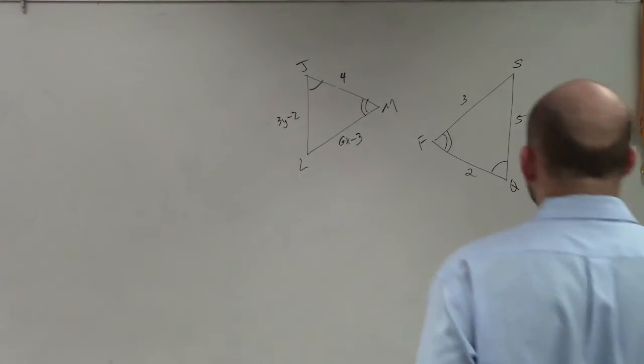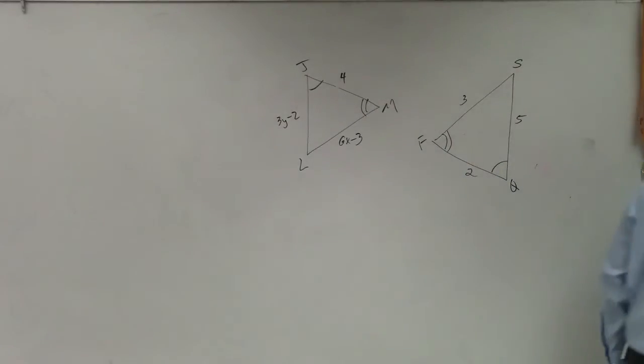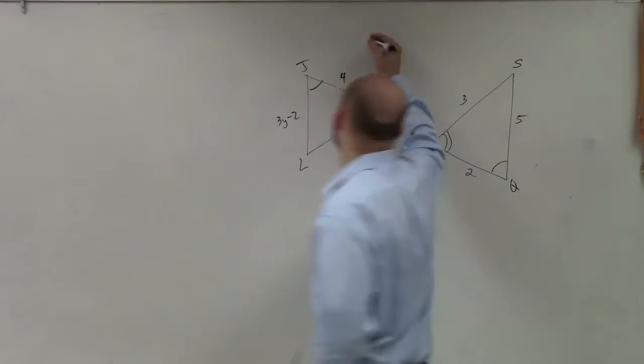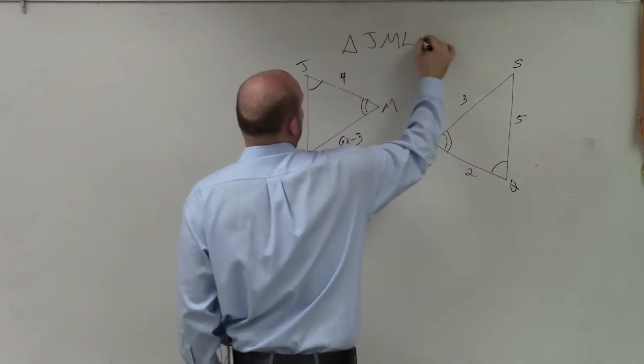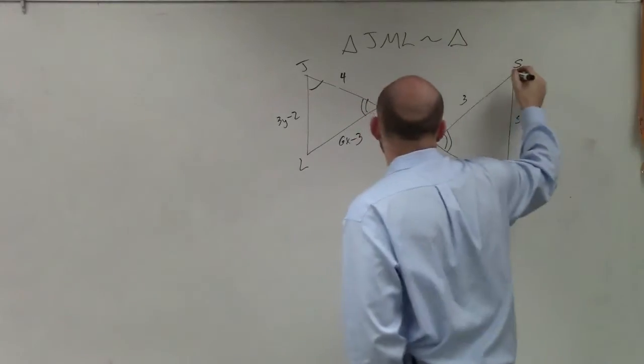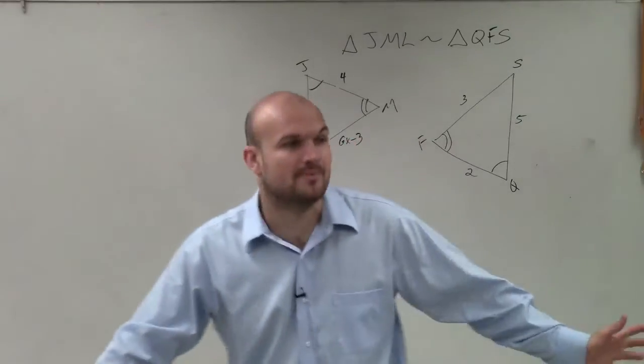So in this case, ladies and gentlemen, what we have is we have two figures. And I believe it does say JML. So actually, they did already tell us triangle JML is similar to triangle QFS. So this is something they tell us in the problem, all right?